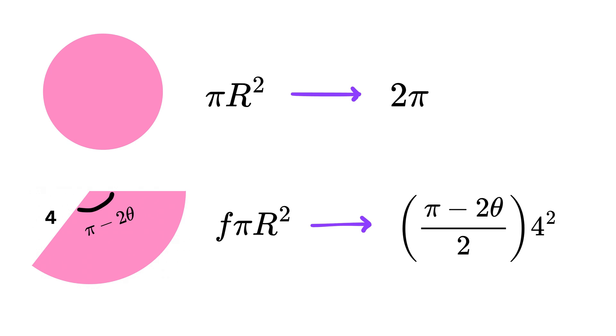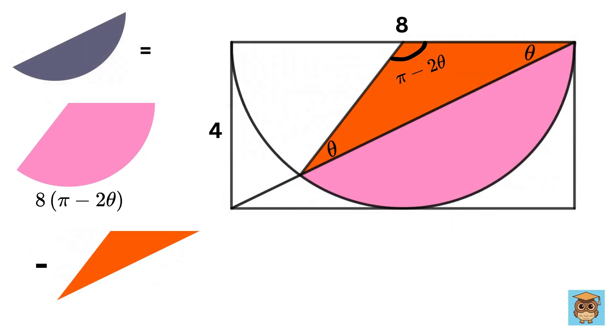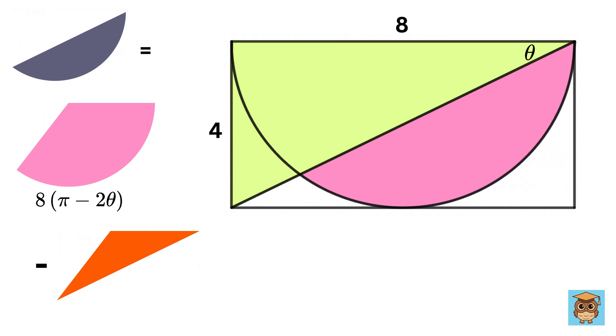Or π minus 2θ times 4 squared upon 2, or 8 times π minus 2θ. Phew! Ok, now consider this big right triangle. We have this as 4 and this as 8, so this diagonal will be under root of 8 squared plus 4 squared, or it will be 64 plus 16, or root 80, which is 4 root 5.